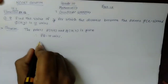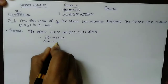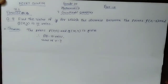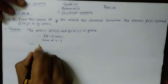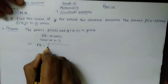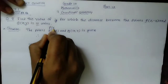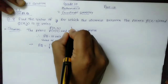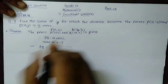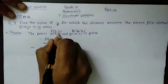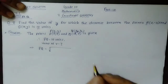We have to find out the value of Y. First of all, I will write it with the distance formula. If we compare with X1, Y1 and X2, Y2, then X1 = 2, Y1 = -3, X2 = 10, and Y2 = Y.